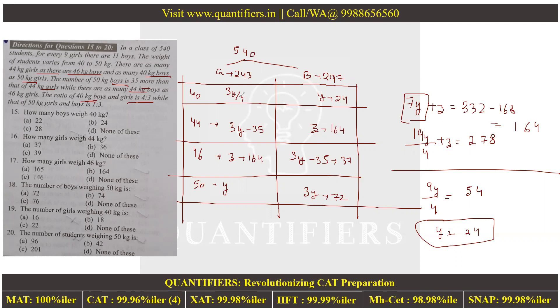3y/4 is 18. So this is 37 and y is 24. This completes my set. How many boys weigh 40 kg? 24, option B. How many girls weigh 44 kg? 37, option A. How many girls weigh 46 kg? 164. Number of boys weighing 50 kg is 72. Number of girls weighing 40 kg is 18. Number of students weighing 50 kg: 24 + 72 = 96.